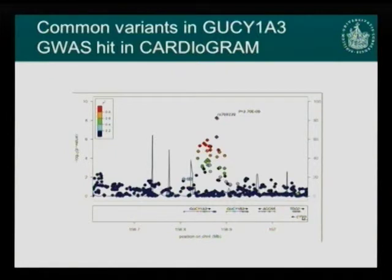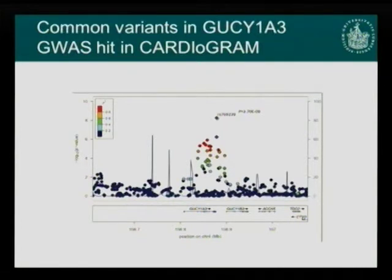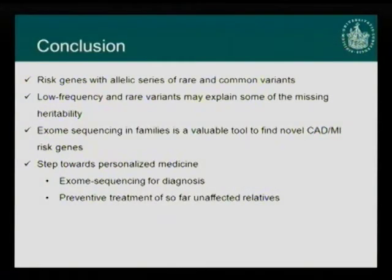On my last slide, I want to come back to the common variants from the start of my presentation. In the GWAS results for this region, we can see that GUCY1A3 harbors common variants with low effect size and also rare variants with higher effect size. To conclude: we now know several risk genes that have allelic series of both common and rare variants, with examples including GUCY1A3 and the LDL receptor gene.